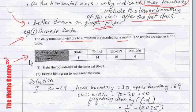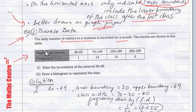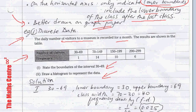The number of visitors is discrete data, so it will be an exact value like 40, 50, 61, 72, 105 — you won't have 102.67. The question asks us to first state the boundaries of the interval 30 to 69, and then draw a histogram to represent this data.